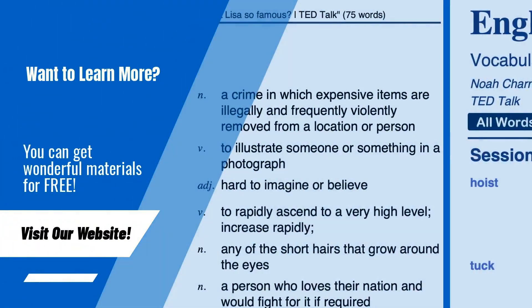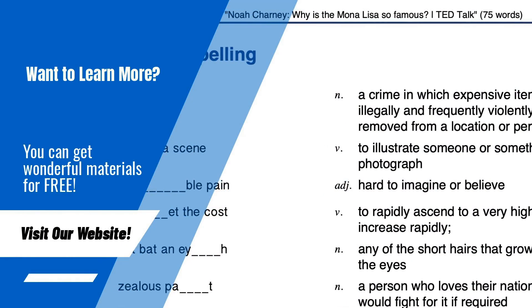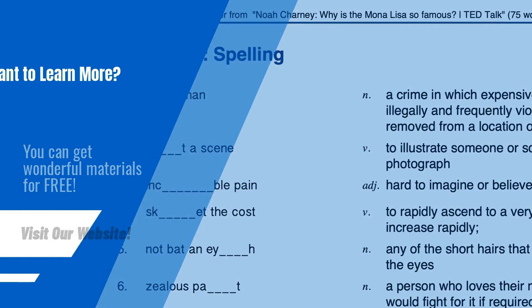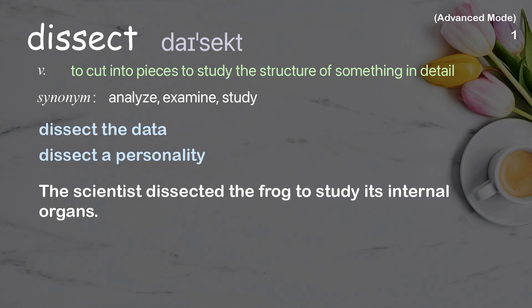On our website, you can get PDF learning materials for free. Please visit anglist.me. Dissect: to cut into pieces, to study the structure of something in detail. Examples: dissect the data; dissect a personality. The scientist dissected the frog to study its internal organs.